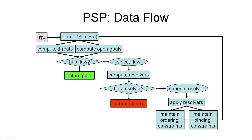Here is the data flow of the PSP algorithm as we've seen it so far. We start off with our initial plan pi zero, consisting of actions, orderings, bindings, and causal links. Then we compute the threats and the open goals, which are the flaws in our overall plan. If we find there is no flaw, we can return this plan as a solution. However, if there are flaws, we select one, compute the resolvers. If there are no resolvers, we return failure. If there is a resolver, we choose one, apply it, maintaining ordering constraints and binding constraints such that variable bindings and orderings are always consistent. Then we go back in our loop with the refined partial plan.